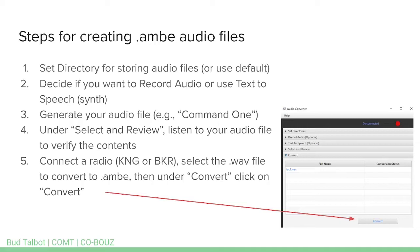When you're in the text-to-speech dialogue, type in the words you want converted to an audio file. There are a couple of synth voice options — a male and a female voice. Type out something like 'Command 1' and record it. Under Select and Review, you can listen to the WAV file to verify the contents — it's not always going to come out how you want, so sometimes you have to experiment. Then connect your radio — KNG or BKR — select that WAV file, go to the Convert tab, and click Convert. Your radio will take that WAV file and convert it to an AMBE file, saved back on your computer in the directory you set up.